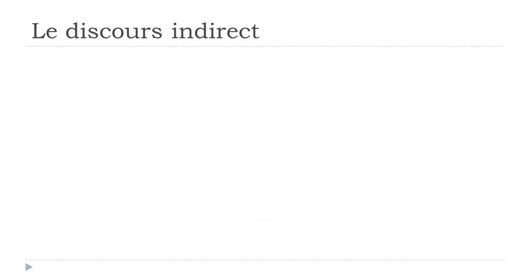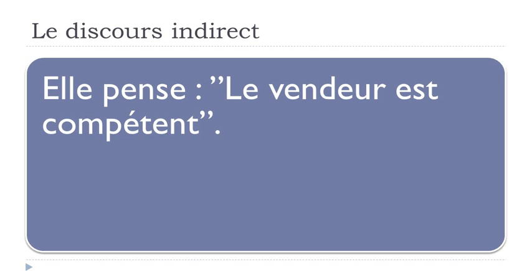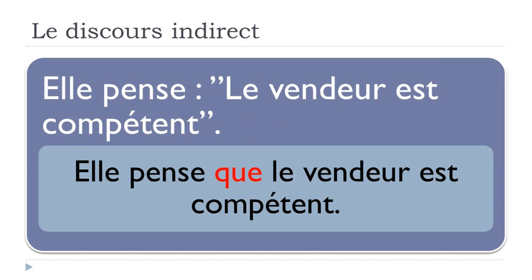What we can do is a really fast overview and review of the discours indirect. Basically, if you've got a sentence like: Elle pense, le vendeur est compétent. Penser is 'to think' — she thinks the seller is competent. It's possible to have this structure, but if you want to combine the two sentences into one, you modify it — that's the discours indirect. You get: Elle pense que le vendeur est compétent.